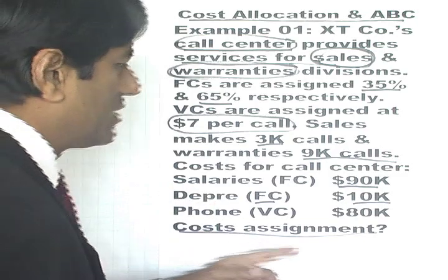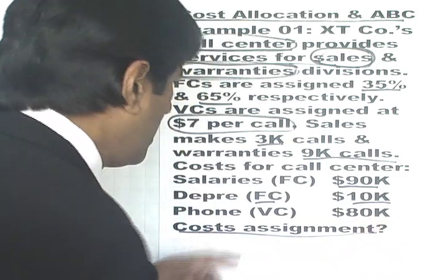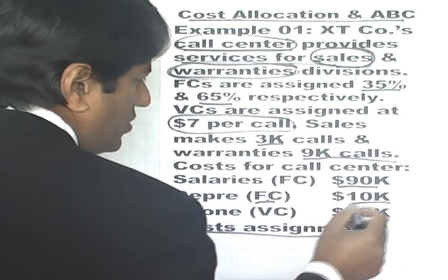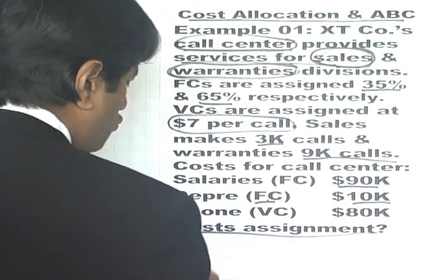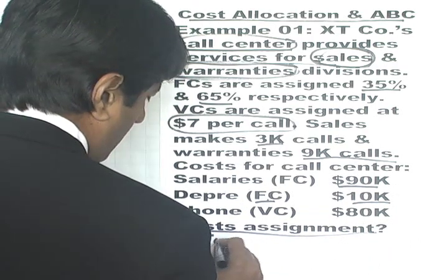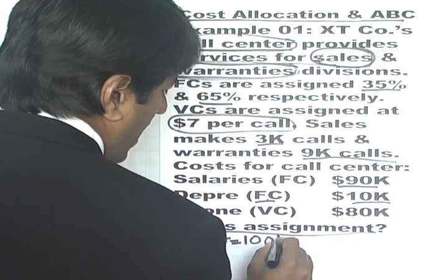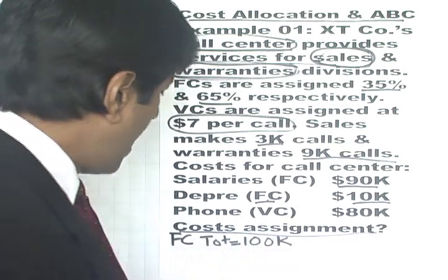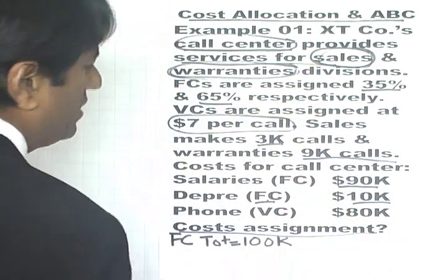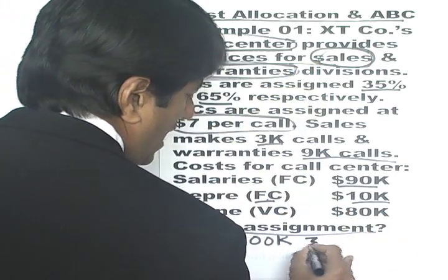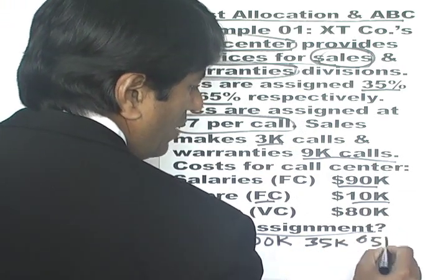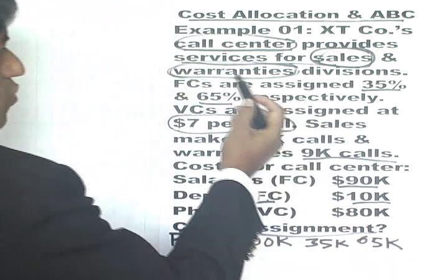First we look at what is the total fixed cost. The total fixed cost is the sum of salaries and depreciation: 90 plus 10, so total fixed equals $100K. Of this, 35% would be assigned to sales — so $35K will go to sales — and 65% will be assigned to warranties, which is $65K.